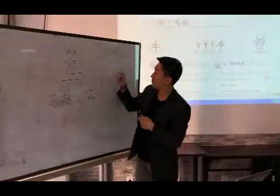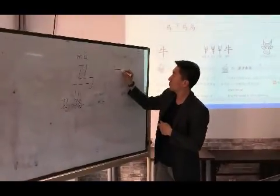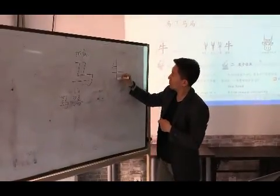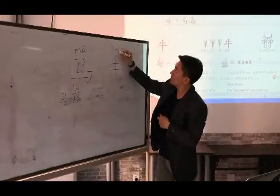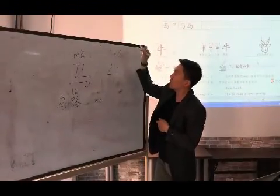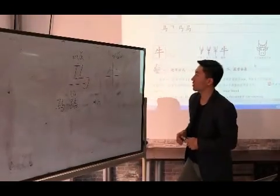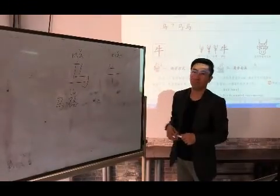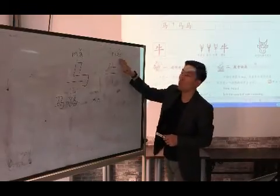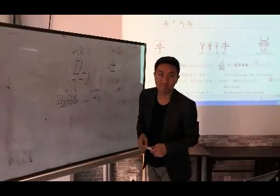So only one horn here. Okay, I read it down here. 牛, 牛, 牛. Read it after me. 牛, 牛, 牛.